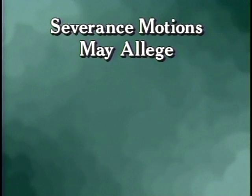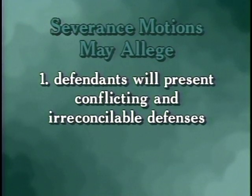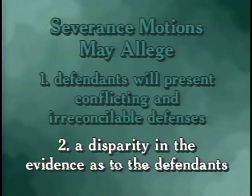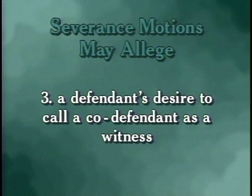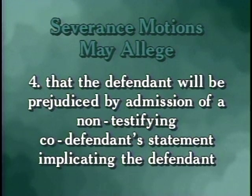Rules 8 and 14 cover joinder and severance. A severance motion may allege that the defendants will present conflicting and irreconcilable defenses, that there is a disparity in the evidence as to the defendants, that the defendant desires to call a co-defendant as a witness, or that the defendant will be prejudiced by admission of a non-testifying co-defendant's statement implicating the defendant. We refer to the last situation as a Bruton situation. Bruton v. United States held that the 6th Amendment requires severance when the government seeks to introduce a statement by a non-testifying co-defendant which implicates that defendant. The rationale is that instructing the jury that the statement is to be considered only as evidence against the non-testifying co-defendant is simply not an adequate substitute for cross-examination.